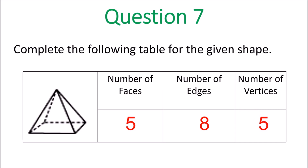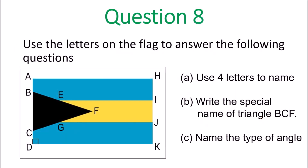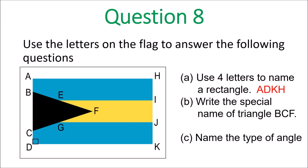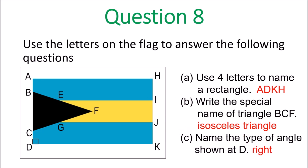Question 8: use the letters on the flag to answer the following questions. Use four letters to name a rectangle — that would be A, D, K, H. Write the special name of triangle BCF — that's an isosceles triangle. Name the type of angle at D — that is a 90-degree angle, or right angle.